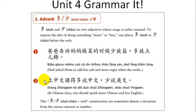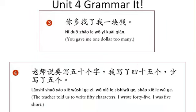Another example: 生中文课得多说中文，少说英文 — in Chinese class, one should speak more Chinese and less English. In this example, 多 and 少 can sometimes denote a deviation from the correct amount or number.